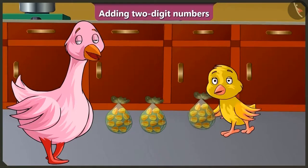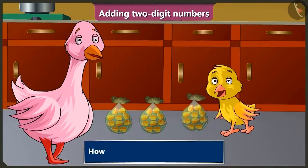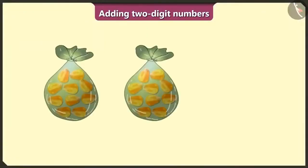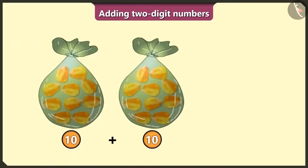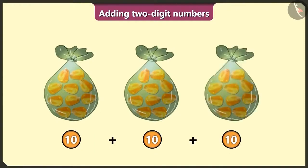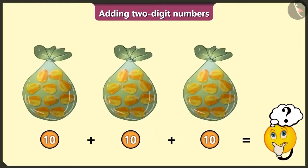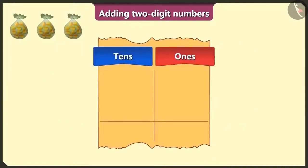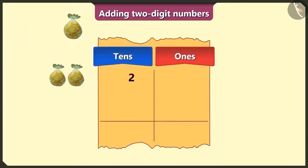Pilu, keep the kernels here. Aunty, now tell me how many grains are there in total? See, Pilu — here we have 2 bags of 10 corn kernels each, that is 2 tens. If we add another bag of 10 kernels to this, then how many grains are there in total? Here, if we add 2 tens, it becomes 20. Adding 1 more ten, we will get a total of 30 grains. We will write 2 in the box of tens and 0 in the box of ones.